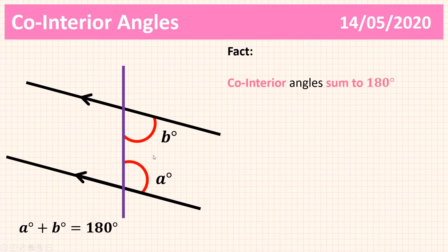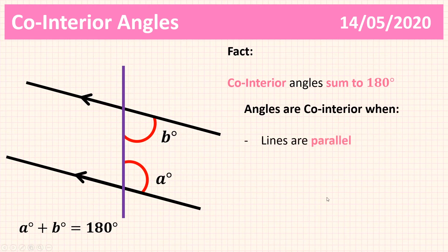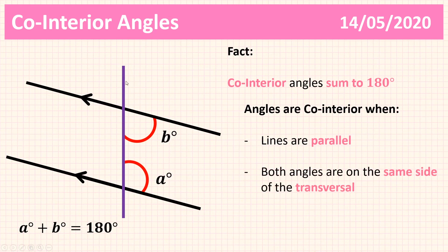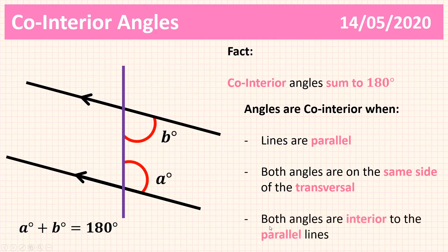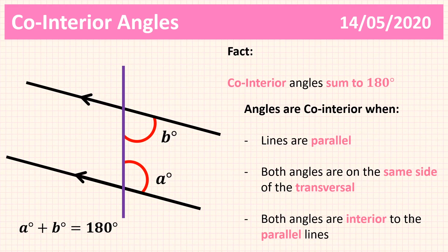Co-interior angles sum to 180. We need to understand what makes two angles co-interior. Angles are co-interior when the lines are parallel — we've got two sets of parallel lines. The angles are on the same side of the transversal: I can see A and B are both on the right of the transversal. And both angles are interior to the parallel lines — they're inside the parallel lines. If we go back to the first task and the parallelogram, we've basically got a little bit of a parallelogram here — the bottom angles of a parallelogram. So co-interior angles: lines are parallel, angles are on the same side of the transversal, and both angles are interior to the parallel lines — then they will be co-interior and they will sum to 180.